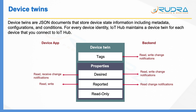The second section is properties. Under properties, you have subsections such as desired, reported, and read-only properties. Desired properties is what the device is expecting from the back-end IoT application. For example, if you have temperature sensors and you want to change the frequency of temperature readings on an ad hoc basis, you can put the frequency as a key-value pair within the desired properties. Using your back-end IoT application, a user can change the frequency, which will get updated into the device twin and notified to the device. The device will read that frequency change and start sending temperature telemetry at the changed frequency.